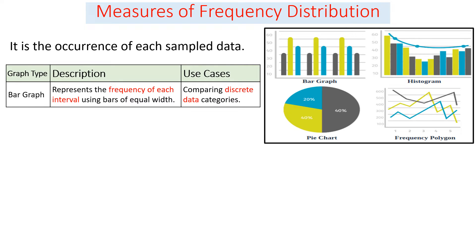Let's look at the graphical representations. The first is the bar graph. As you see in the picture, the bar graph represents the frequency of each interval using bars of equal widths. The width of each bar shows the interval, and the height of the bar represents the frequency. The bar graph has an interval — a gap — between each consecutive bar, which shows that it is used for comparing discrete data categories or interval data.